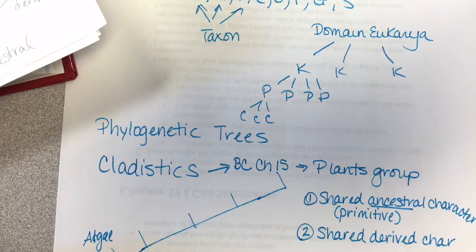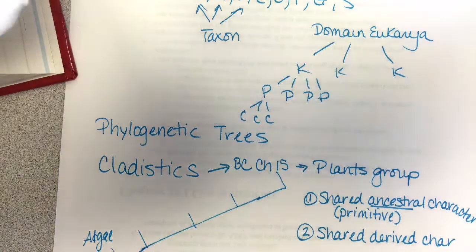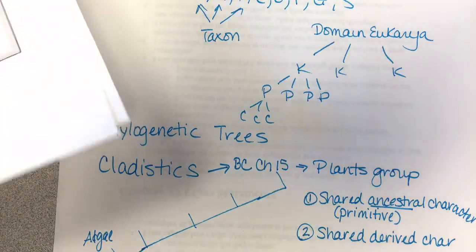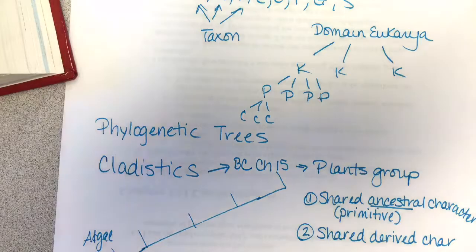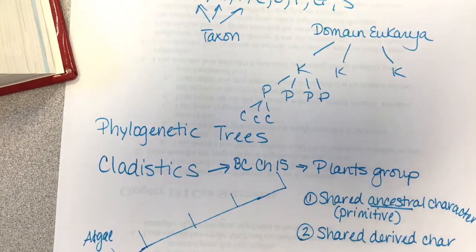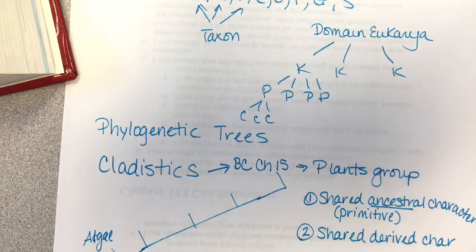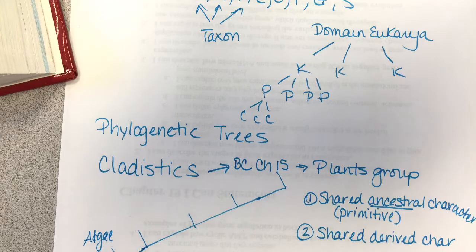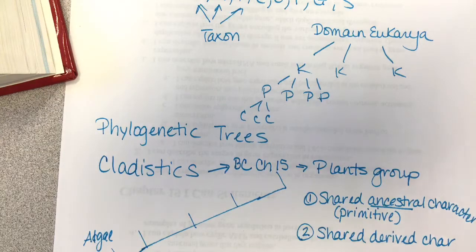Going over that phylogenetic tree handout is helpful, and that's basically Chapter 25. So we just looked at chapters 24 and 25. I'm not going to do Chapter 26 because we just covered it — just look at the geologic record, the order of events, and what occurs when. Study hard and I'll see you later.